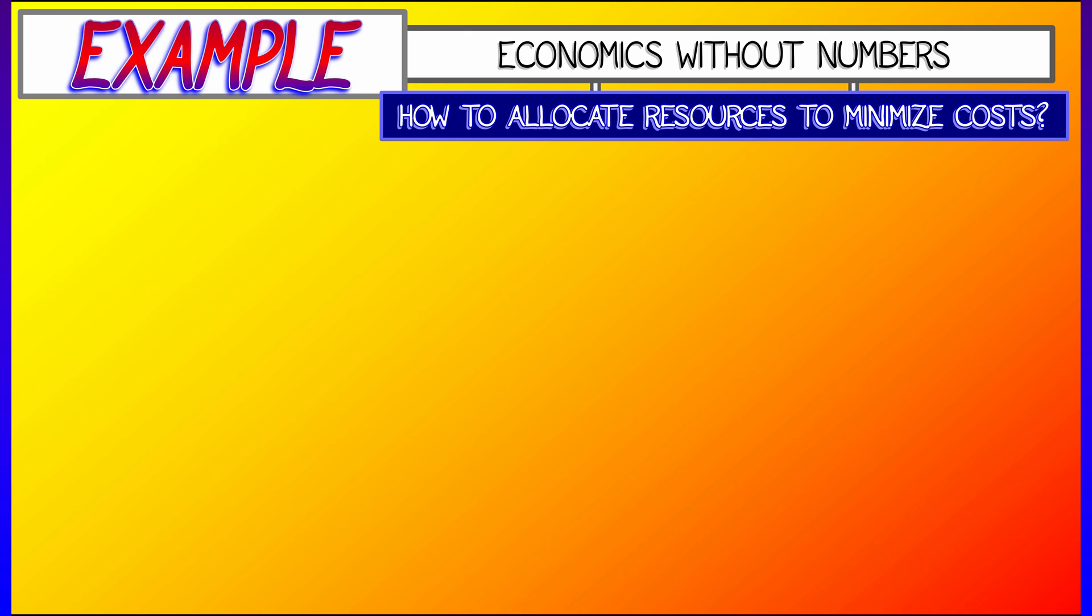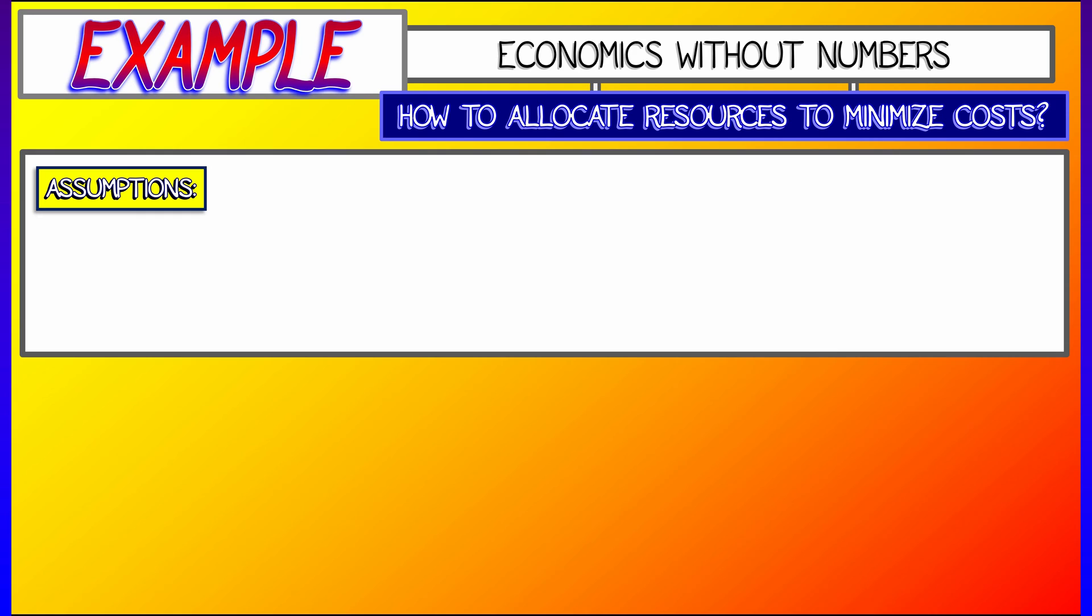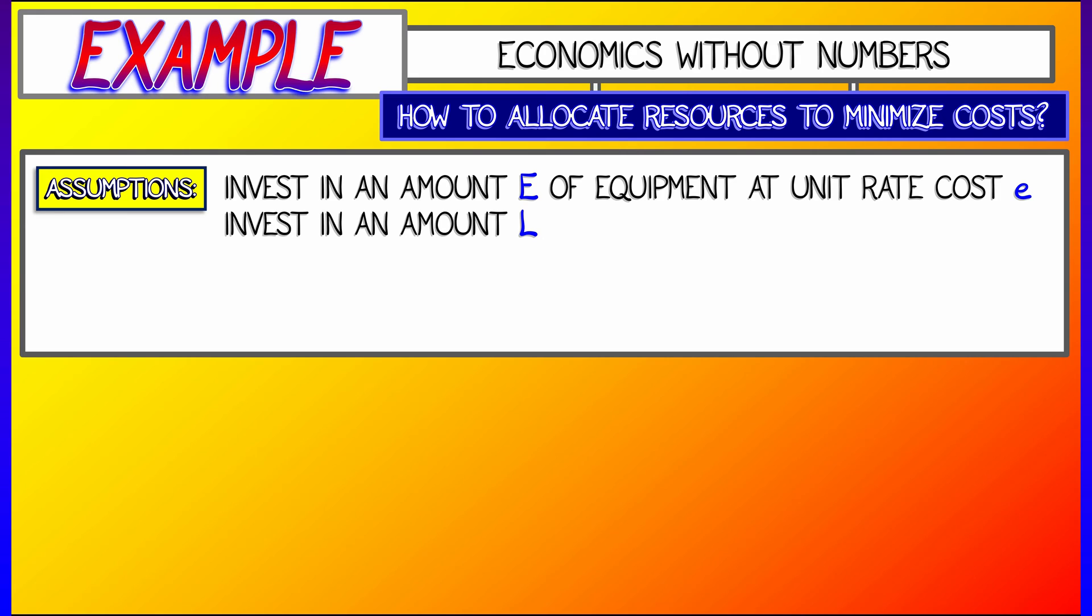Consider the following resource allocation problem. You've got a company and you have to spend money on both equipment and labor. Let's say that you purchase big E amount of equipment at a unit rate cost of little e. That's how much the stuff costs. You do the same thing with labor. You purchase an amount big L of labor at a unit rate cost of little l.